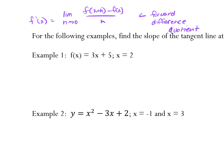In this particular case, since we have a specific value for X, what we're going to do is take the limit as H approaches 0 of F(2 + H) minus F(2), all over H.